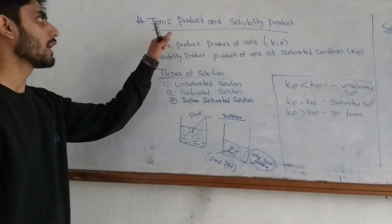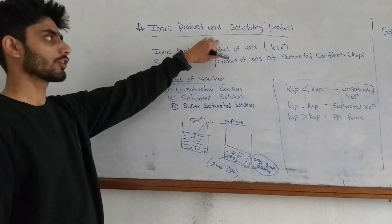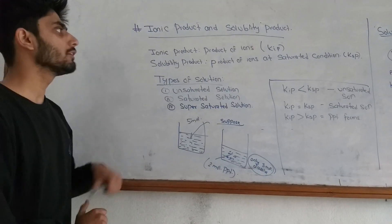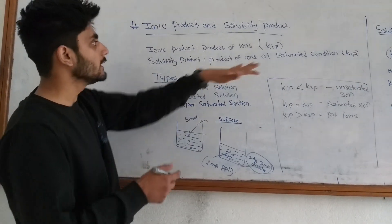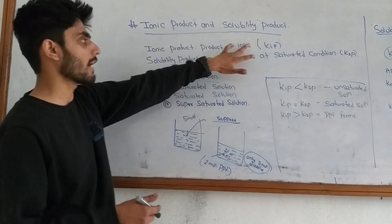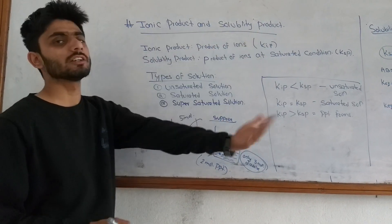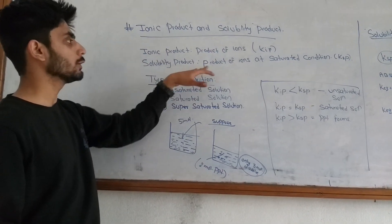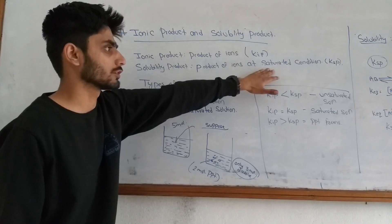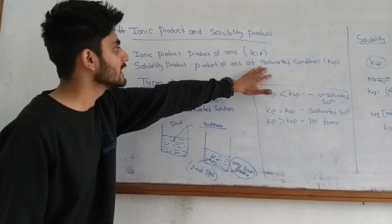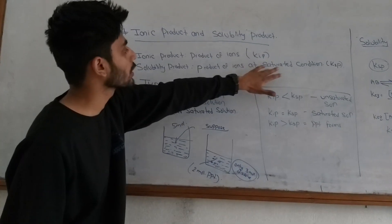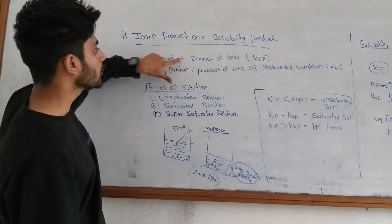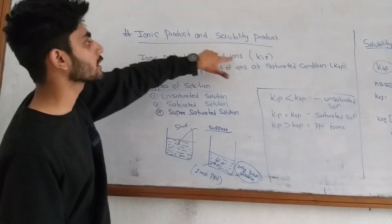Hi friends. Today we will discuss ionic product and solubility product. So what is ionic product? It is the product of ions. Product of ions at any condition is known as ionic product. Now, solubility product is the product of ions at saturated condition. Saturated condition — the product of ions is solubility product.